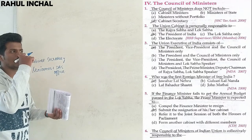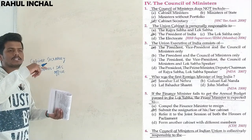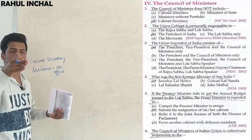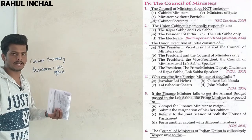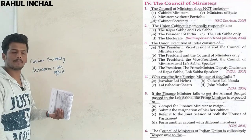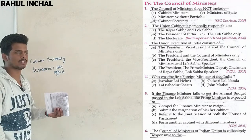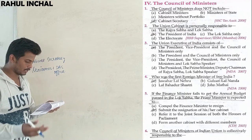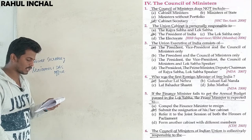Article 74 talks about the Council of Ministers who can aid the President. Article 75 talks about the appointment and resignation of ministers of the Council of Ministers. So remember: 74 is about aiding the President, and 75 is about appointment and resignation.